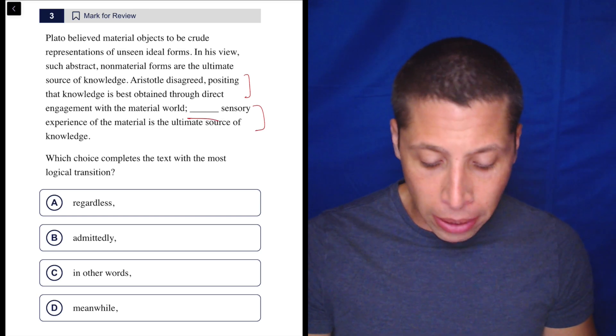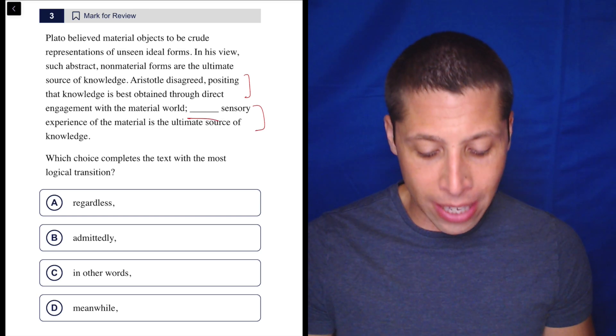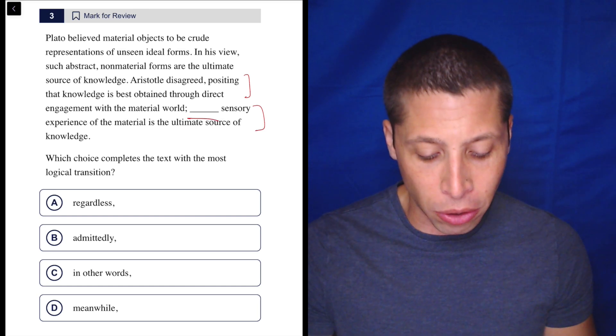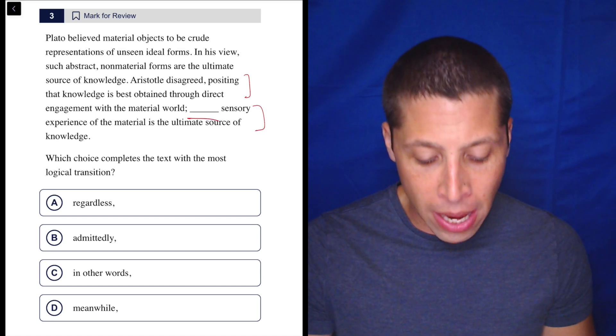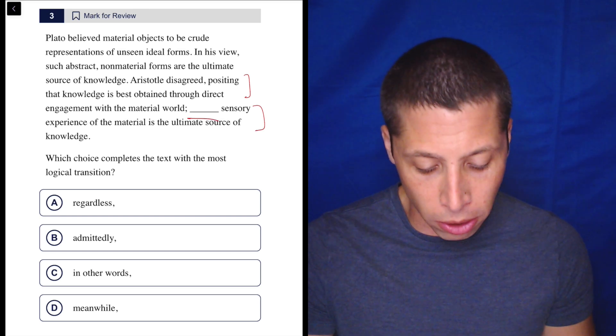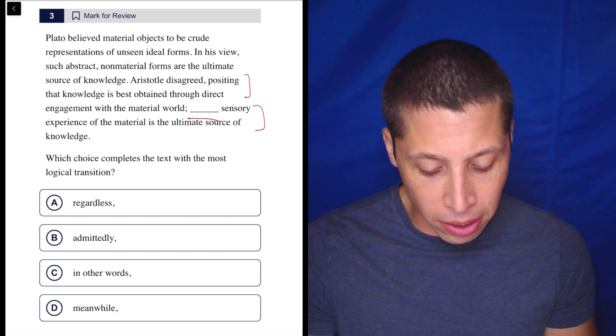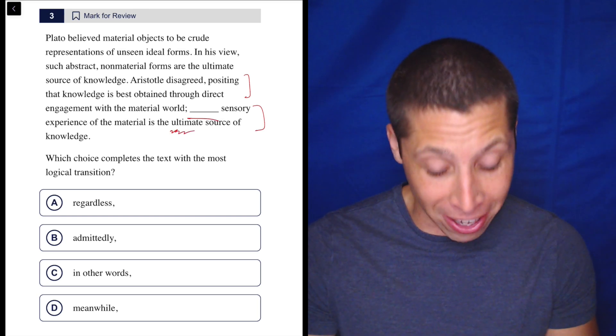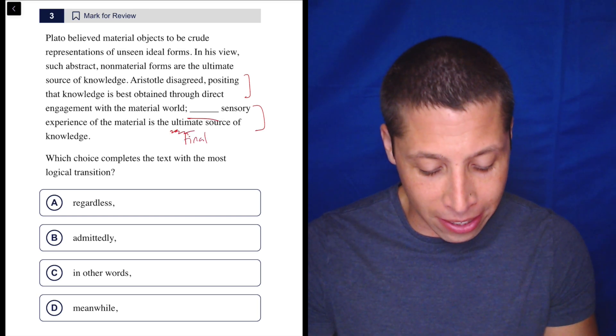Still, we should read everything. Plato believed material objects to be crude representations of unseen ideal forms. In his view, such abstract non-material forms are the ultimate source of knowledge. Aristotle disagreed, positing that knowledge is best obtained through direct engagement with the material world. Sensory experience of the material is the ultimate source of knowledge. There's that word ultimate, which means final, which we saw in the last question.